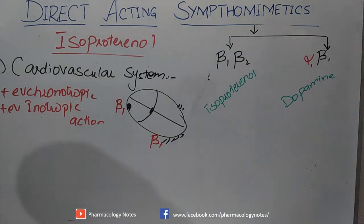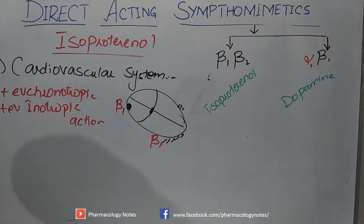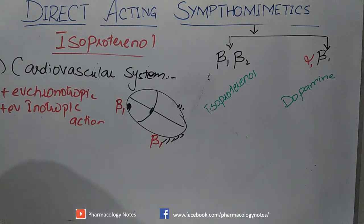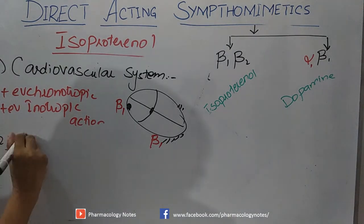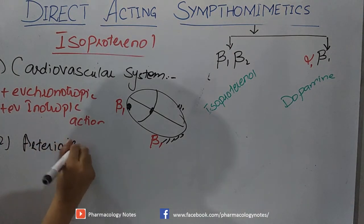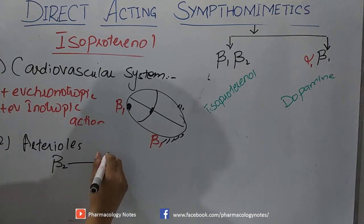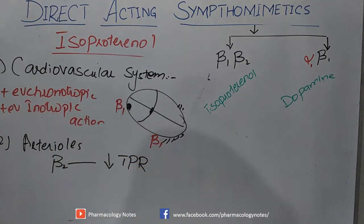Isoproterenol is used in the treatment of atrio-ventricular (AV) block. By its Beta-2 effect on skeletal muscle vasculature, it dilates arterioles, which decreases total peripheral vascular resistance. This makes the drug unsuitable or unstable for routine use.